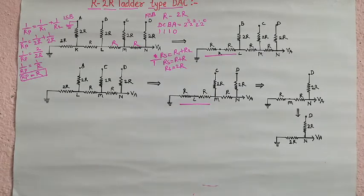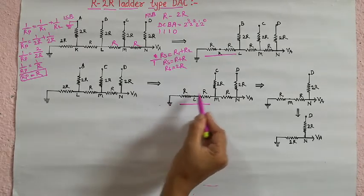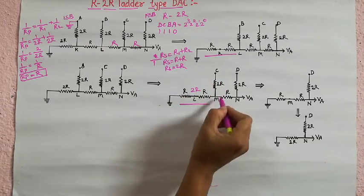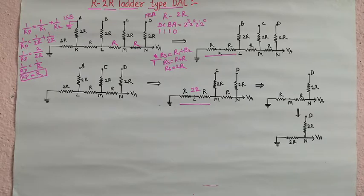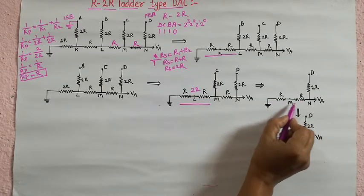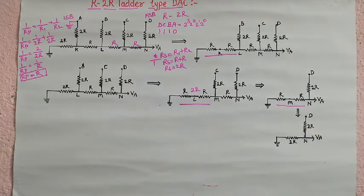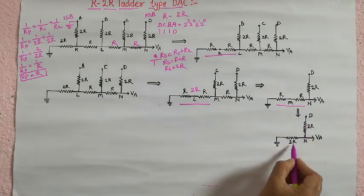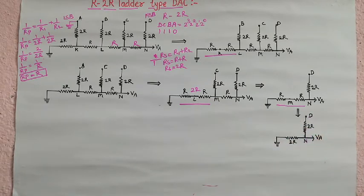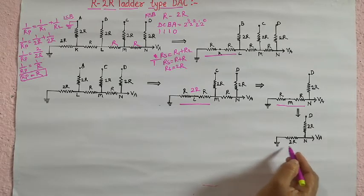Again, the resistance between M and L is equal to R, and L to ground is equal to R. These are in series, which reduces to 2R between node M and ground. Then those two 2R resistors are again in parallel, reducing the resistance between M and ground to R. Similarly, the resistance between M and N is R in series, making R+R = 2R. Therefore, the resistance between any node and ground is equal to 2R.